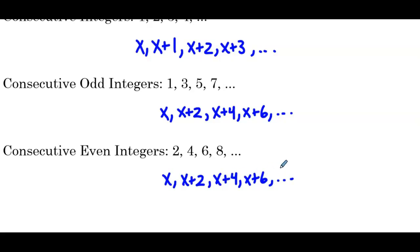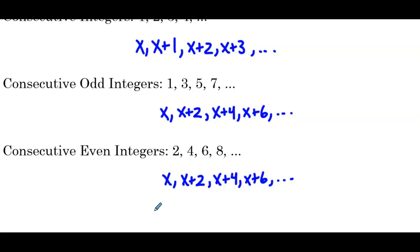Take a second to compare consecutive odd and consecutive even. What we should notice is that we define them the same way with variables. Our definition would be let x be an odd integer. If x starts as an odd integer, let's say 11, then the string would be 11, 13, 15, 17 — all odd integers. Similarly, if we define x to be the first even integer, let's say 20, then we'd have 20, 22, 24, 26 — all consecutive even integers.